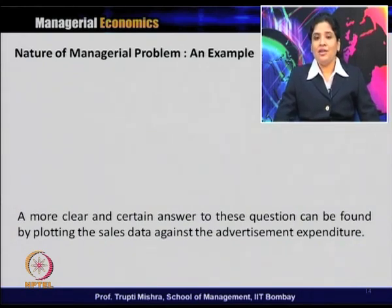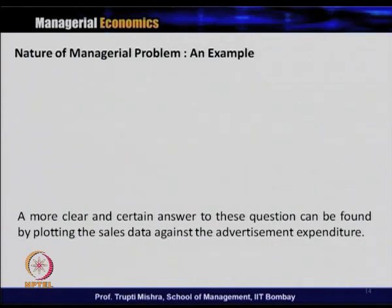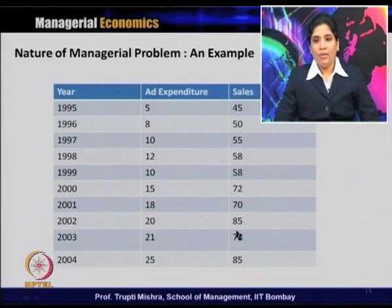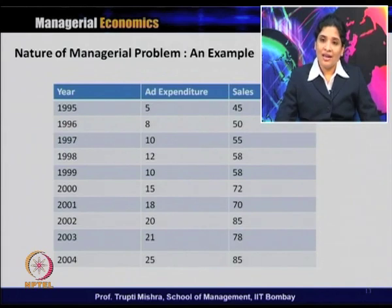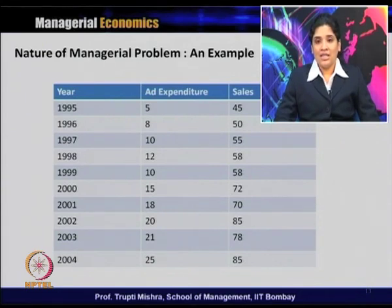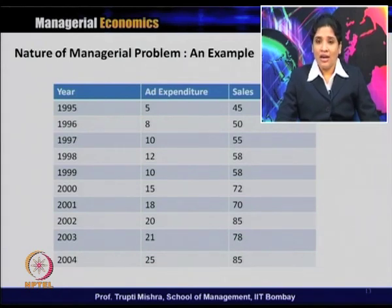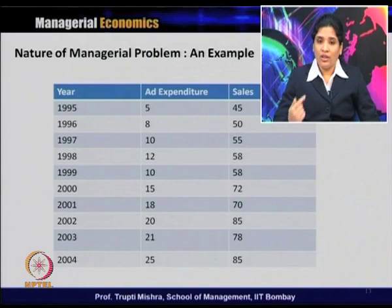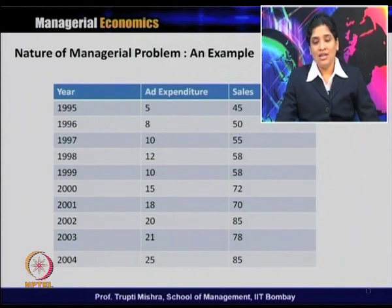A clearer answer to this question can be found by plotting sales against advertisement expenditure in a scatter diagram. Whatever is shown in the table can be represented in a graph to see the kind of relationship between advertisement expenditure and sales — whether it is positive or negative. The second question is the magnitude: whether a corresponding increase in advertisement expenditure leads to more or less increase in sales, or what is the percentage change in sales.